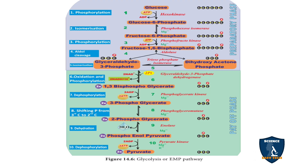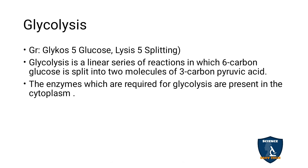So that is the definition of glycolysis — it goes in a straight linear manner, one after another. Glucose is converted into pyruvic acid. The enzymes required for glycolysis are present in the cytoplasm.